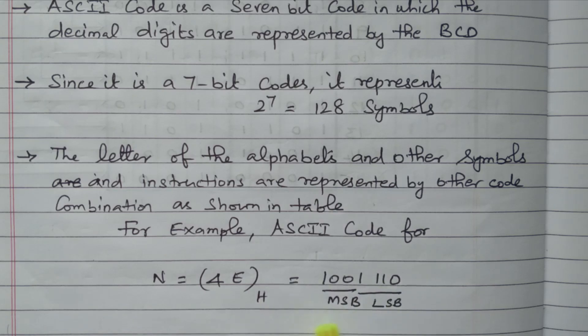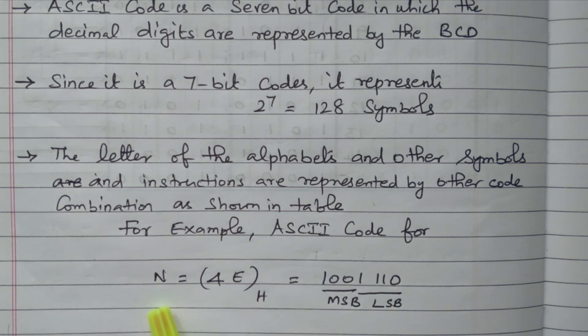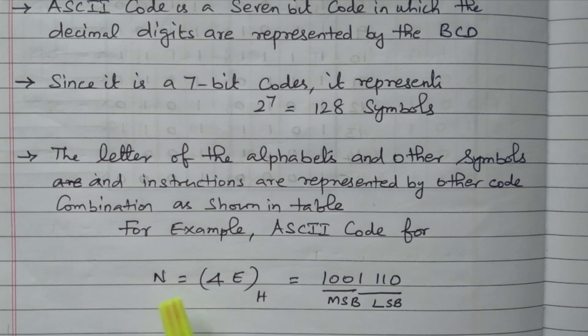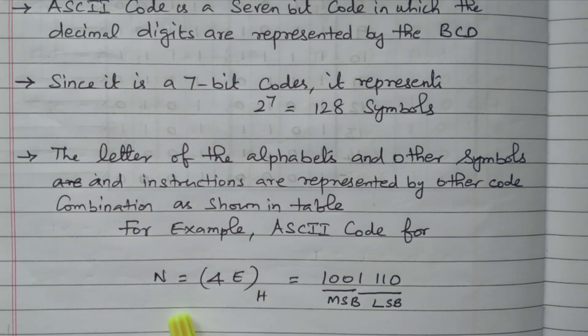Like this, we can represent other alphabets — both small letter and capital letter — as well as numbers, instructions, and special characters. A separate tabular column is available. Now we will see the tabular column.